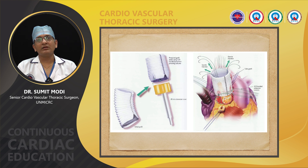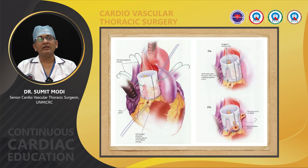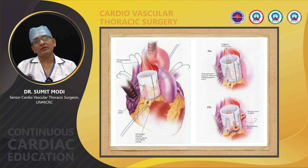Now we have to decide about the height of the aortic commissure. Usually the height is measured from the lowest point of the intercuspal triangle to the highest point of the commissure — that is the commissure height. We need to draw a line over the graft with a marker and all three valve posts are fixed with 2-0 double-armed Prolene over the graft. The aortic sinus wall has to be sutured to the prosthetic graft with 4-0 Prolene suture in a continuous fashion.